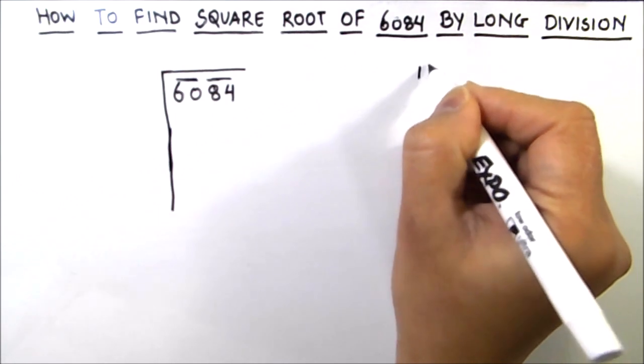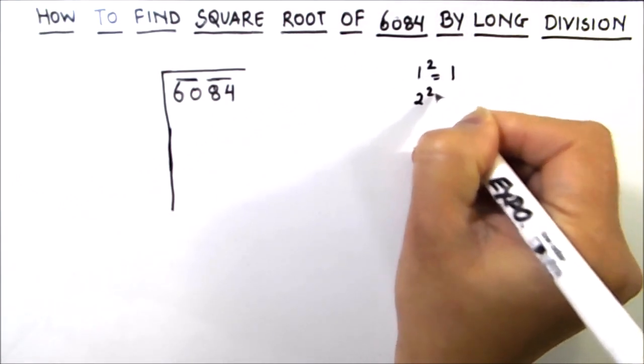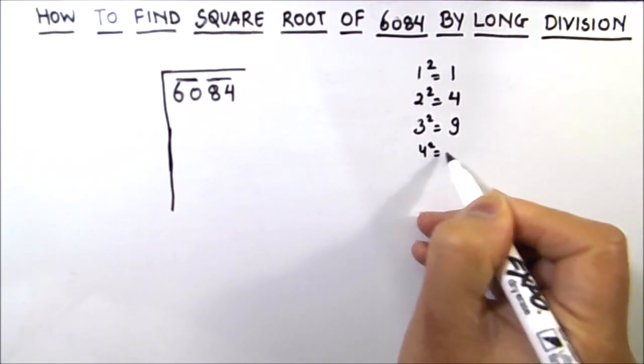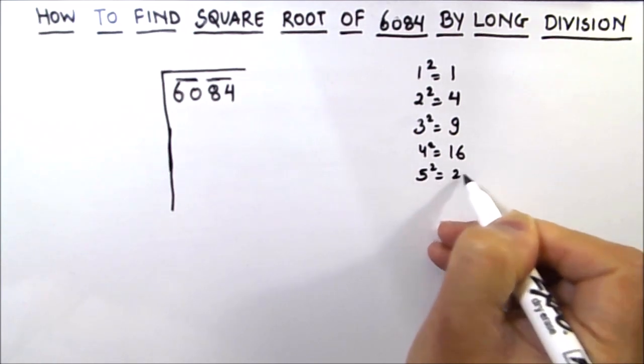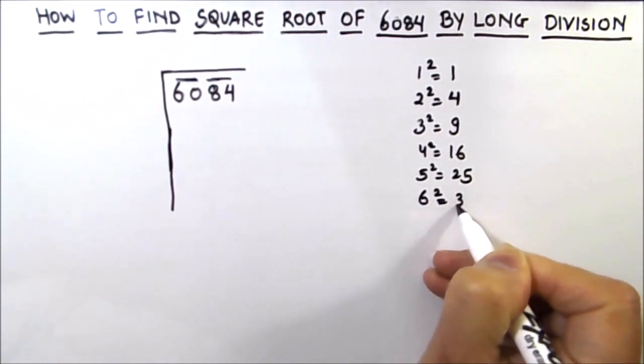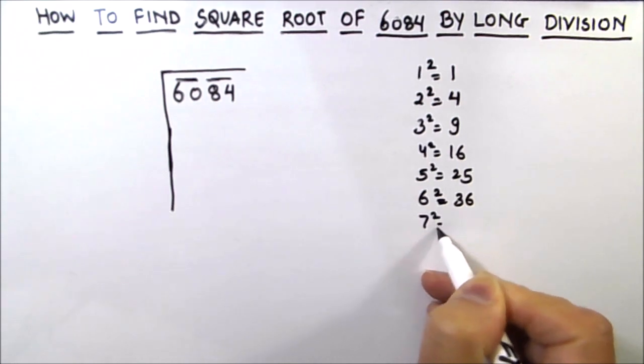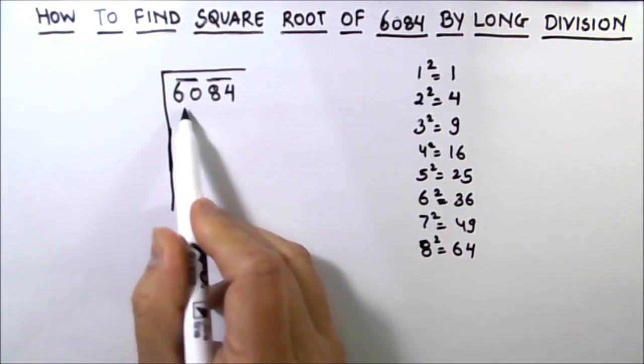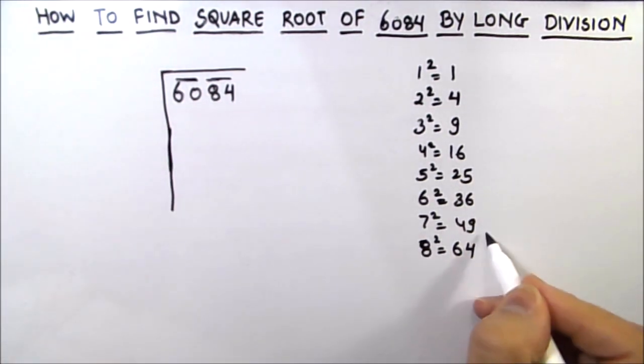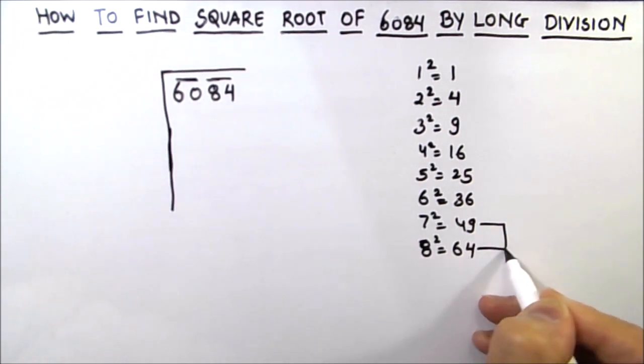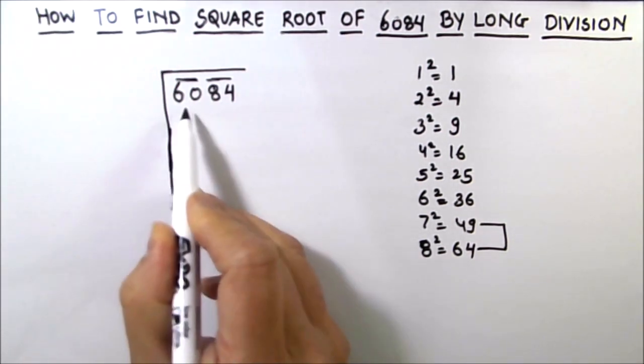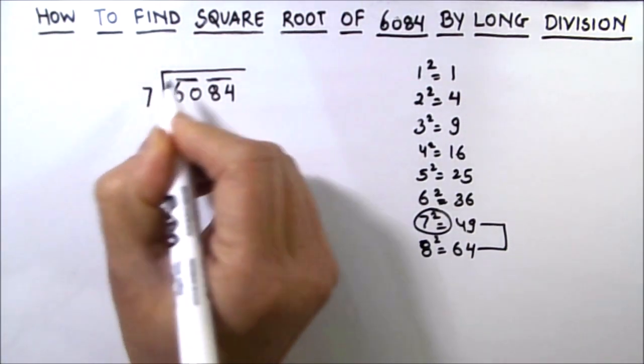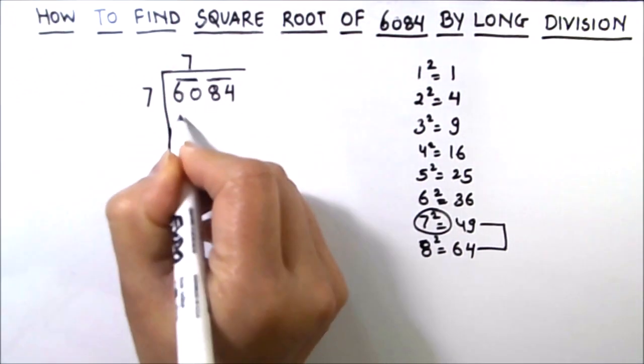So we have our square numbers as 1 square is 1, 2 square is 4, 3 square as 9, 4 square as 16, 5 square as 25, 6 square as 36, 7 square as 49, 8 square as 64. We have our number as 60. So 60 would lie in between 7 square and 8 square as 8 square is more than 60. So we are going to use 7 as our square number. So 7 times 7 is equal to 49.